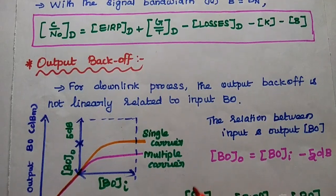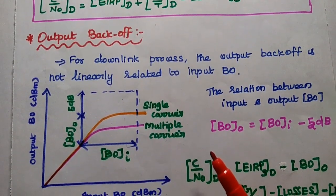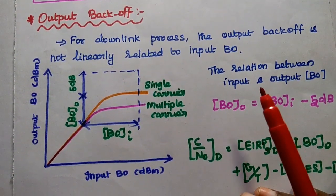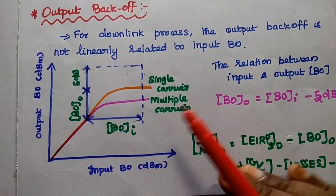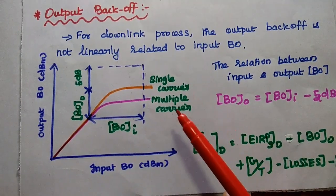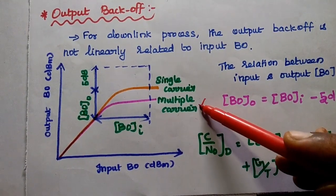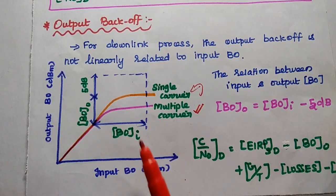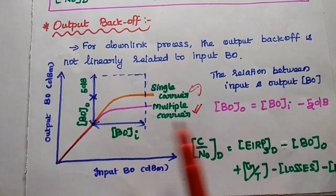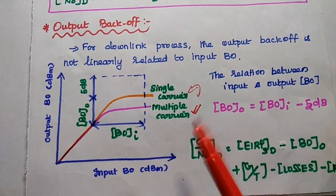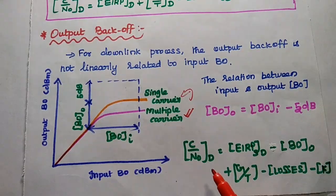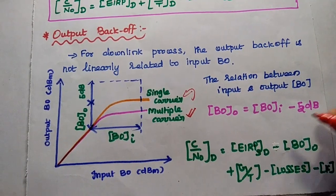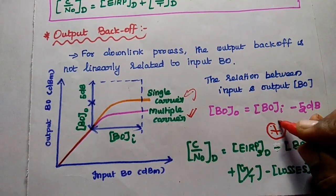For uplink, input backoff is the important parameter; for downlink, output backoff is very important. The output backoff is not linearly related to the input backoff. For multiple carriers relative to single carrier operation, the output backoff equals the input backoff minus 5 dB. So the carrier to noise density for downlink is: C/N0_D = EIRP_SD − BOO + G/T − losses − K.